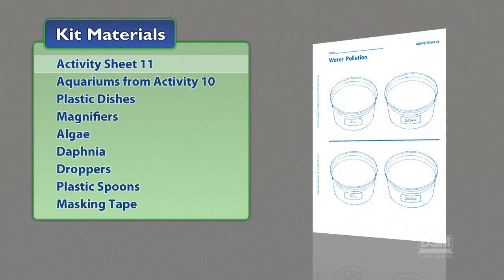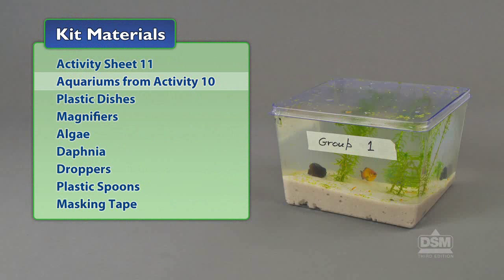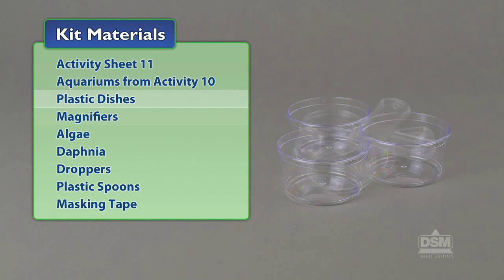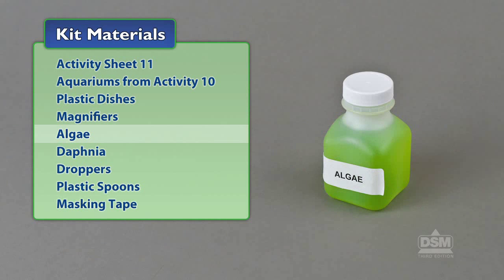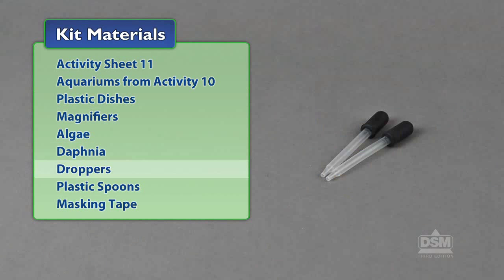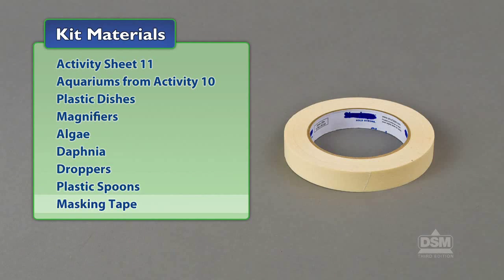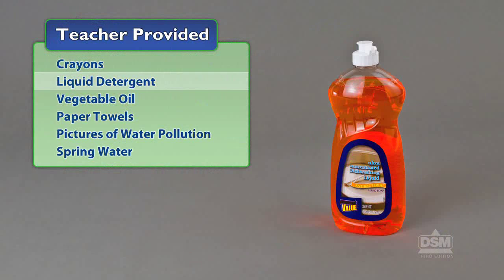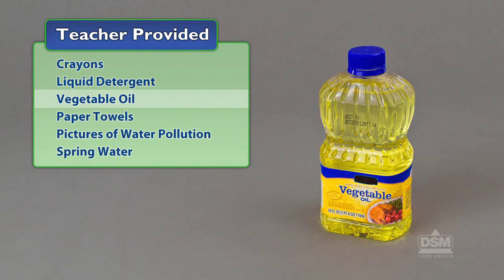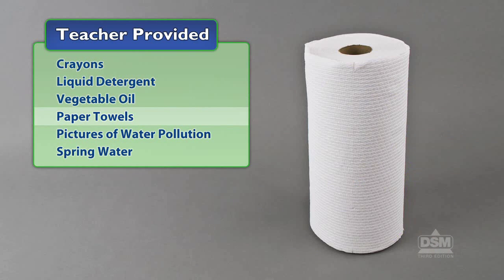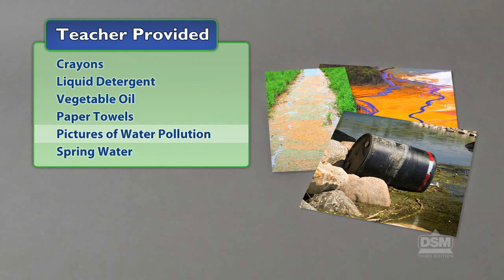You will need the following materials from the kit: Activity Sheet 11, Aquariums from Activity 10, Plastic Dishes, Magnifiers, Algae, Daphnia, Droppers, Plastic Spoons, and Masking Tape. You will also need to provide Crayons, Liquid Detergent, Vegetable Oil, Paper Towels, Pictures of Water Pollution, and Spring Water.